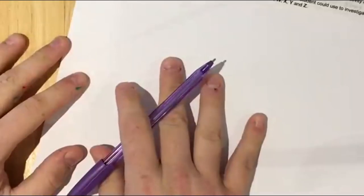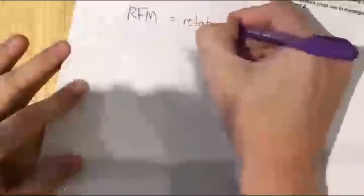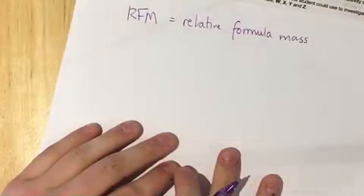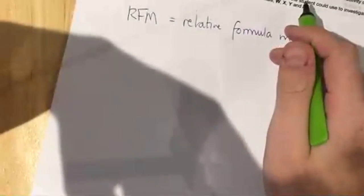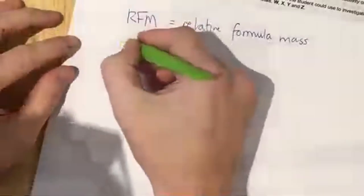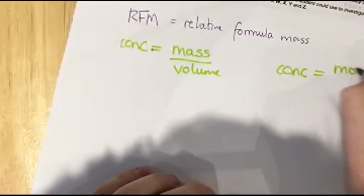Quantitative chemistry basically boils down to: can you calculate relative formula mass (RFM)? You also need to be able to calculate concentration — concentration is mass divided by volume. For higher tier, concentration can also be moles divided by volume.